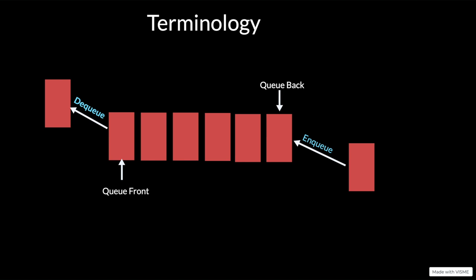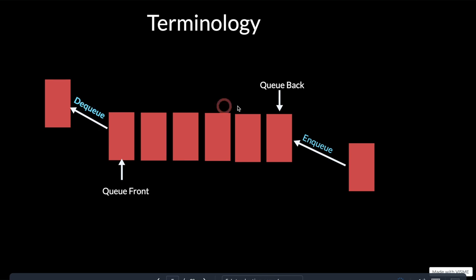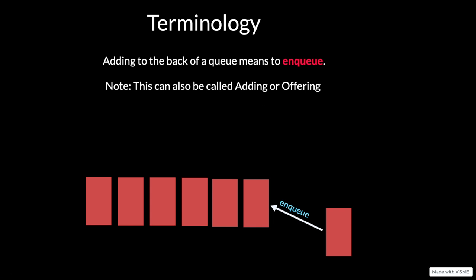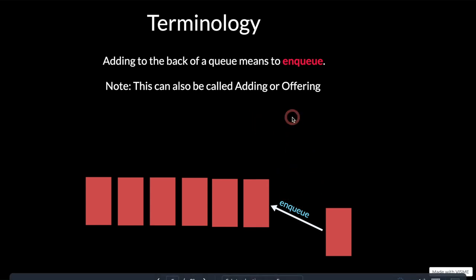Now let's look at the terminologies used with a queue. The first term is enqueue. To enqueue means to add an element from the back of a queue. This operation can also be called adding or offering — you can say you added a new element to the queue, or you offered a new element to the queue. Those terms mean the same thing.